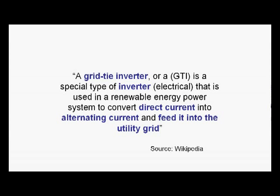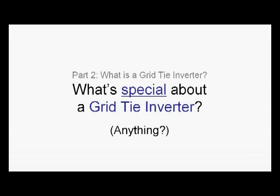A grid tie inverter, or GTI, is a special type of inverter that is used in a renewable energy power system to convert direct current into alternating current and feed it into the utility grid. But what really is special? I noticed that Wikipedia used the word 'special' — but is it really special? Is there anything that different about a grid tie inverter other than the label and the price? Well, let's have a look.